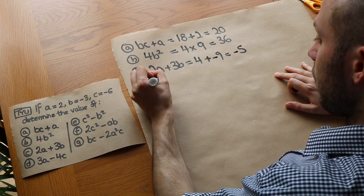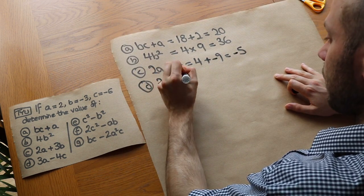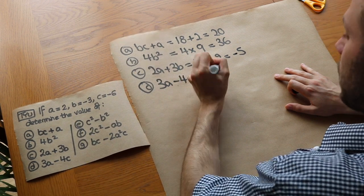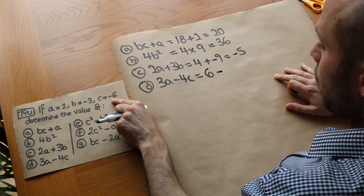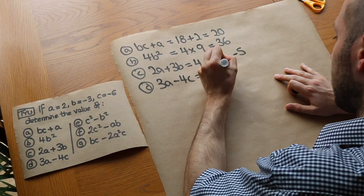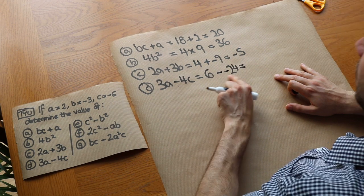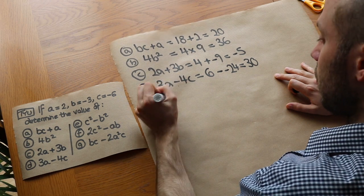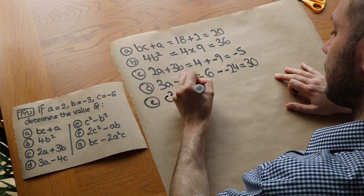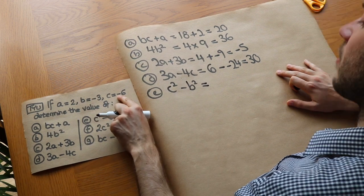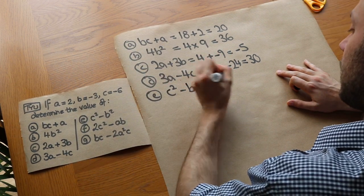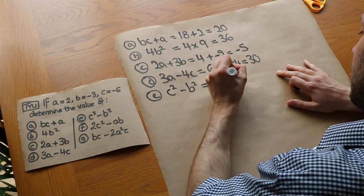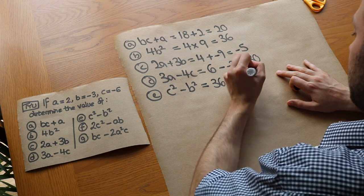3a minus 4c: 3a is 3 lots of 2, which is 6, minus 4c — that's 4 times minus 6, which is minus 24. Subtracting a negative means adding, so it becomes 6 plus 24, which is 30. Then c squared minus b squared: c squared is minus 6 squared, which is 36, minus b squared — minus 3 squared is positive 9. And 36 minus 9 is 27.